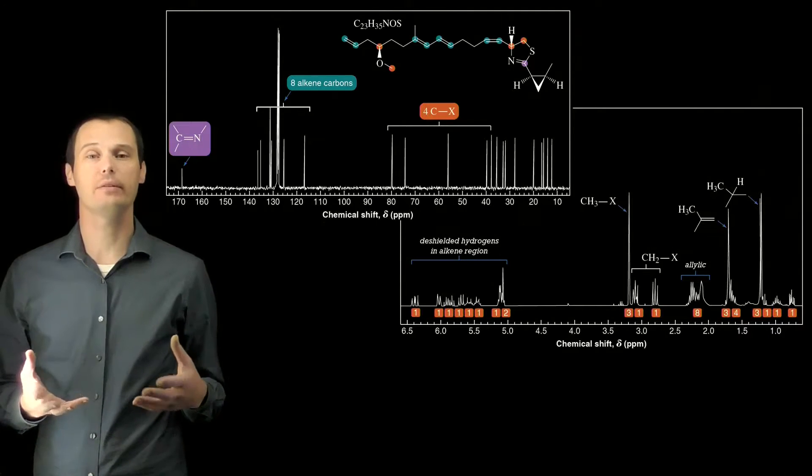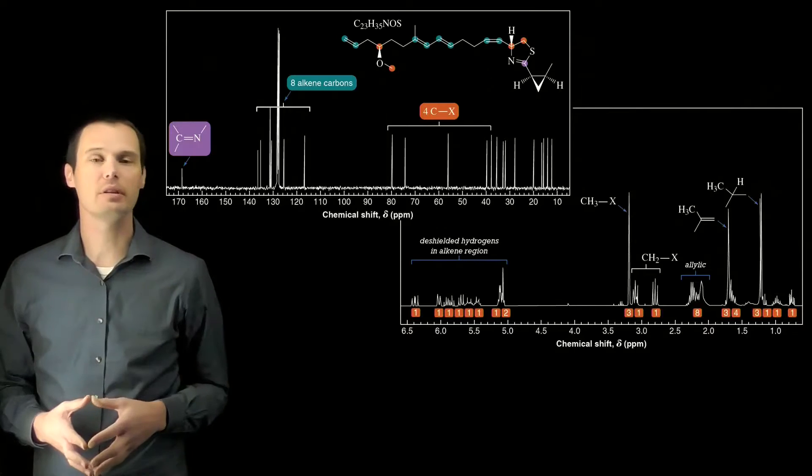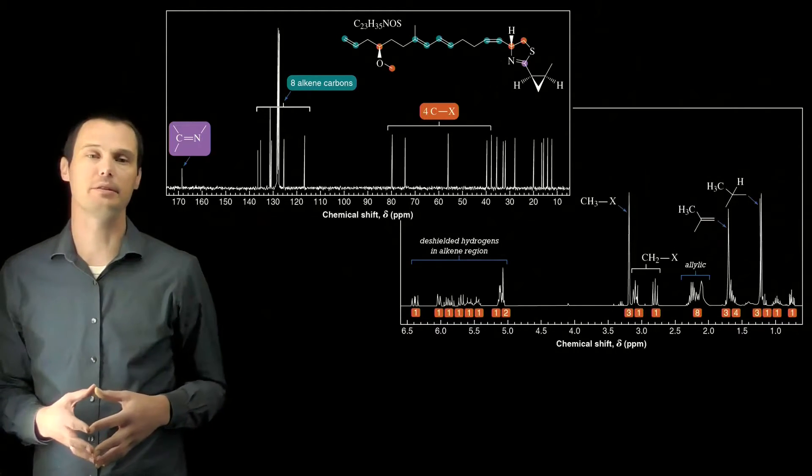It has an index of hydrogen deficiency of 7, which is greater than 4, which typically suggests a benzene ring. It has several signals in the 100 to 150 range of the carbon NMR, which suggests a benzene ring.